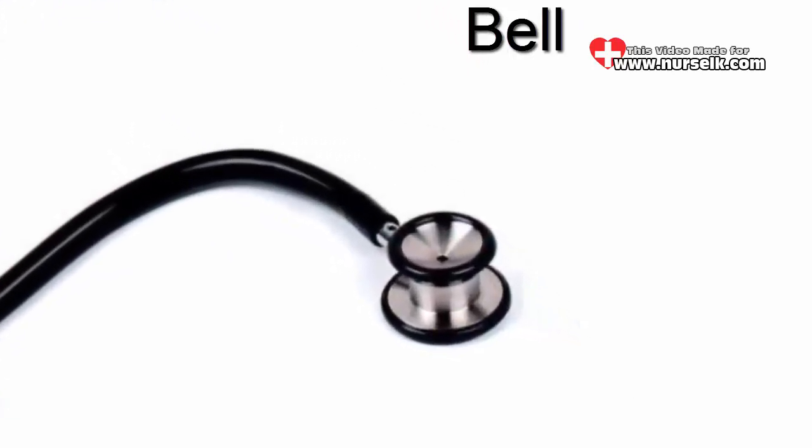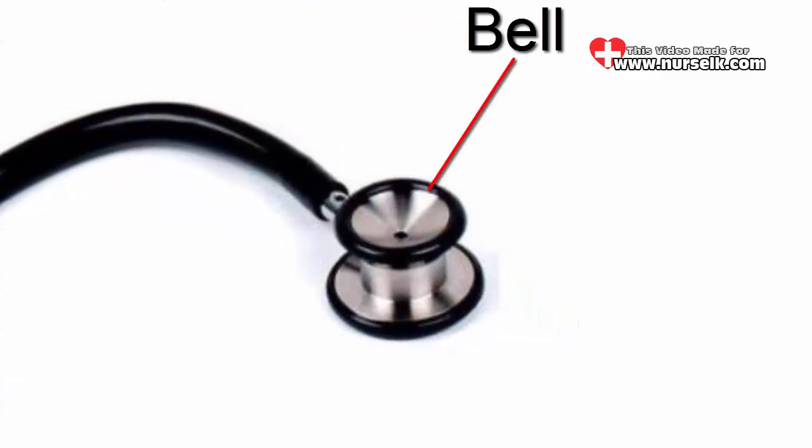Bell. The bell is the smaller circular end of the chest piece. This side of the device focuses on a narrower range, listens for lower frequency sounds that may not easily be detected by the diaphragm.